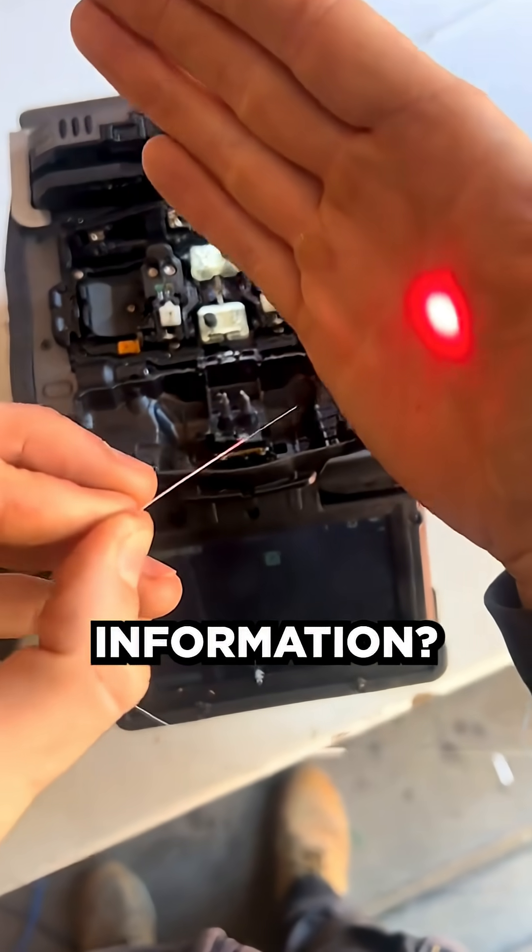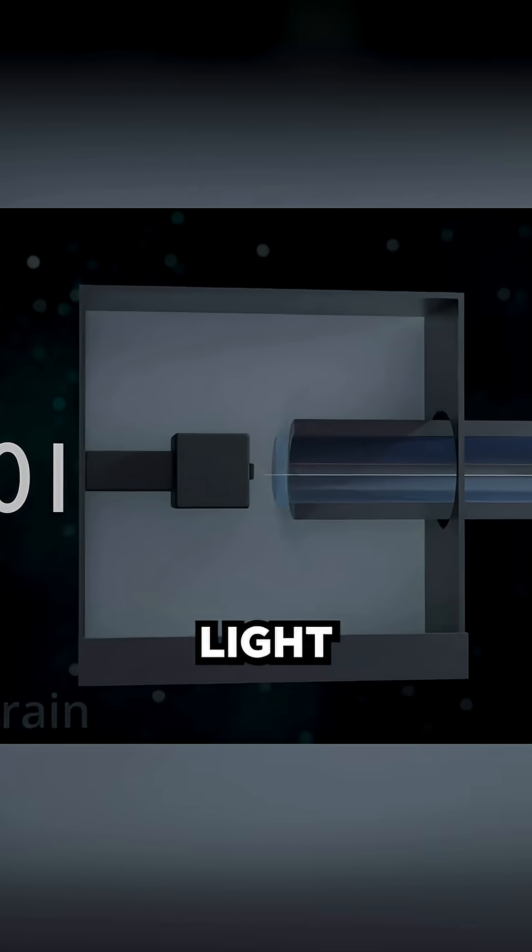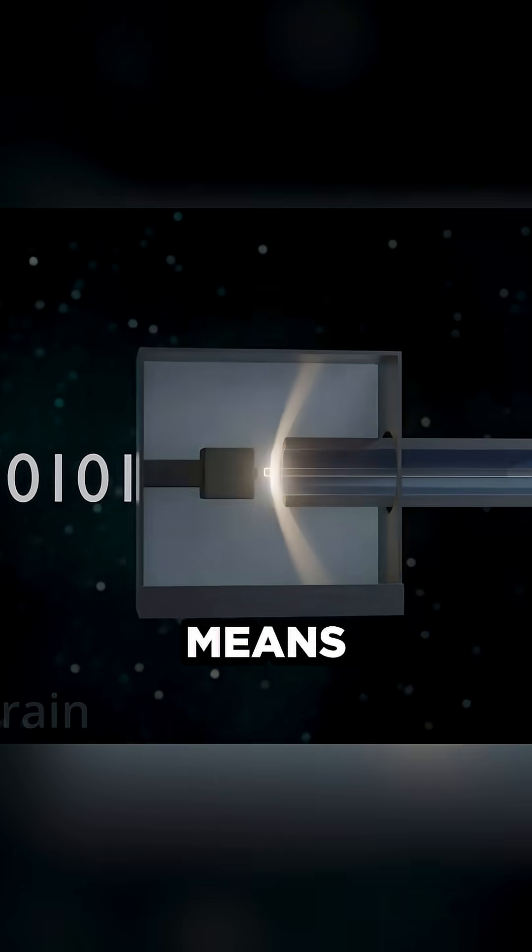But how does light carry information? All digital data is binary, just zeros and ones. We use light pulses to represent them. The simplest method is on-off keying. Light on means one. Light off means zero.